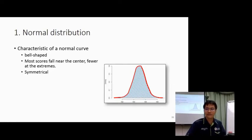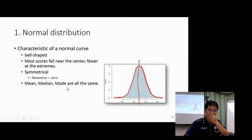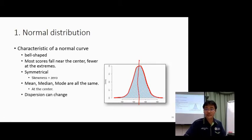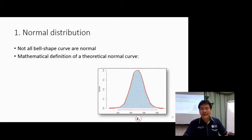The normal curve is usually symmetric — the right side and left side of the distribution are the same. The skewness is zero, and the mean, median, and mode are all the same at the center. The dispersion can vary, but not all bell-shaped curves are normal. That is why there is a mathematical definition of the theoretical normal curve.